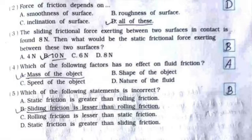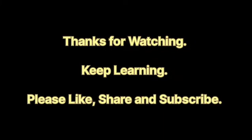Number five: which of the following statements is incorrect? The answer is option B — sliding friction is lesser than rolling friction. And here we come to the end of experiment number nine.